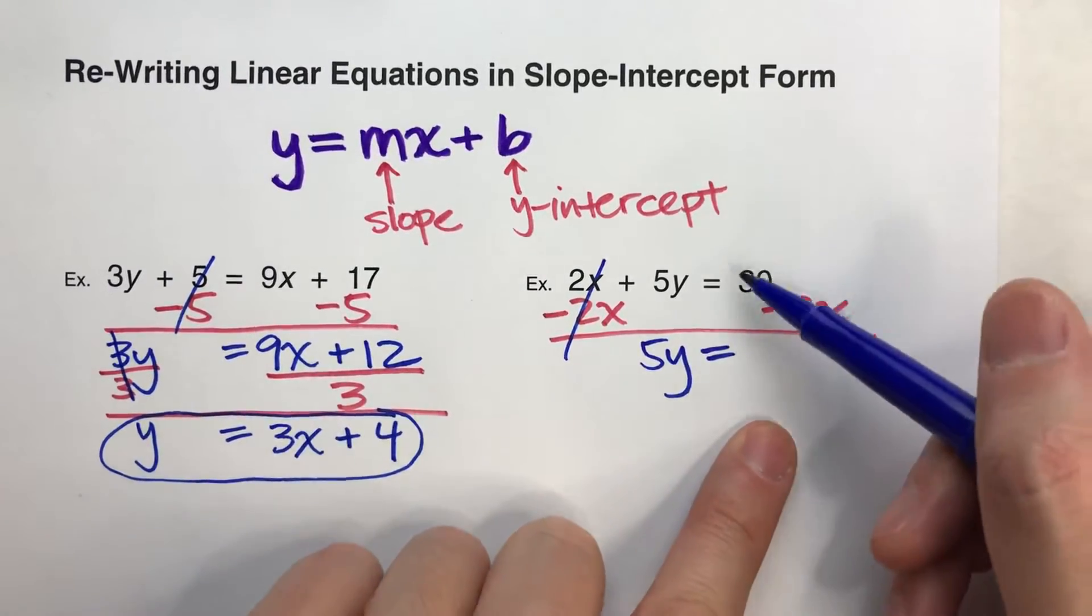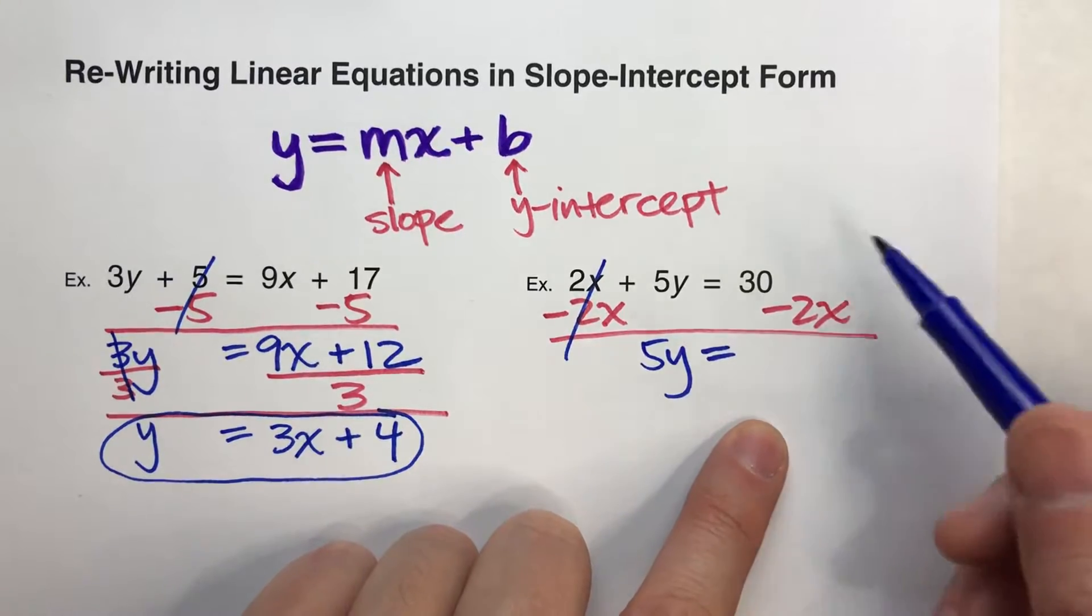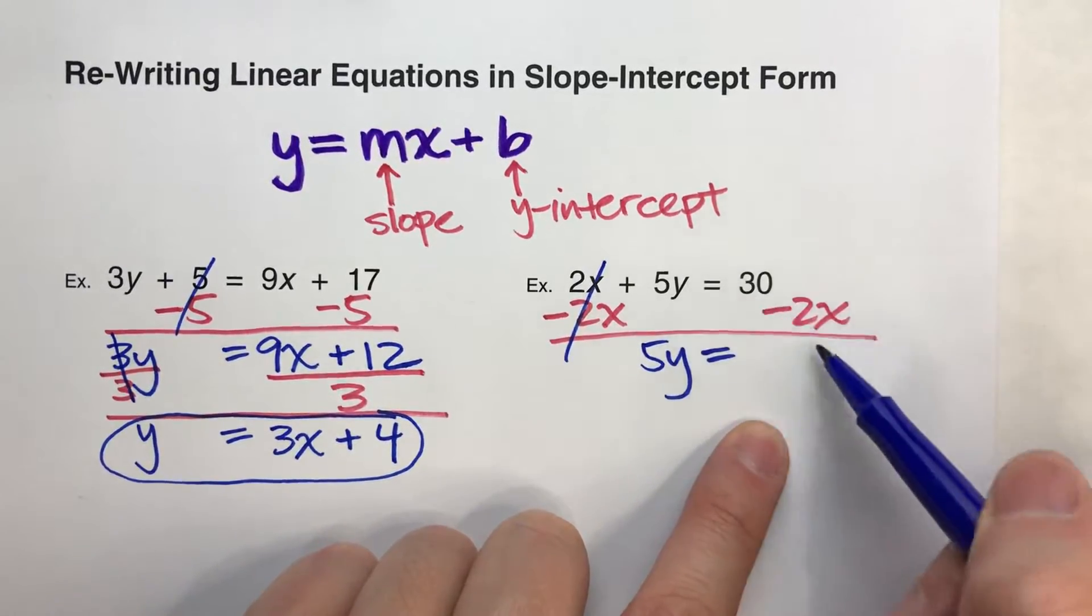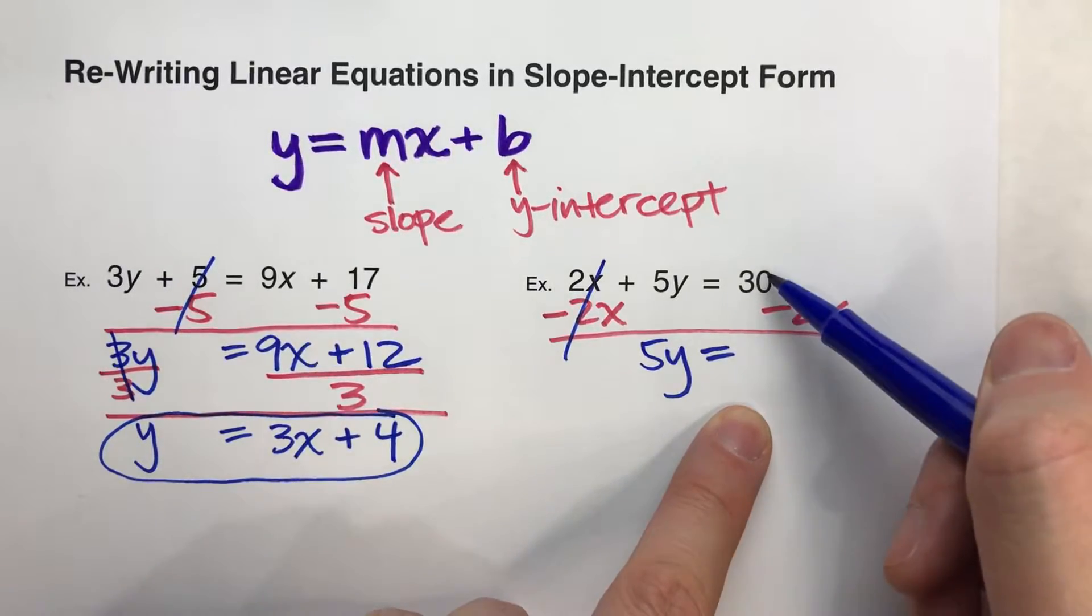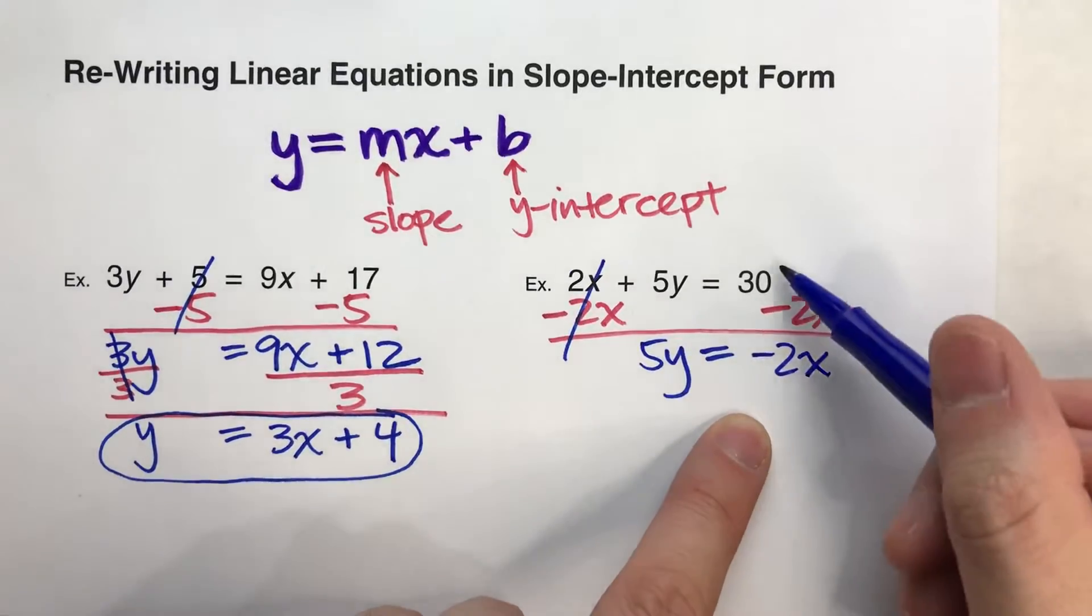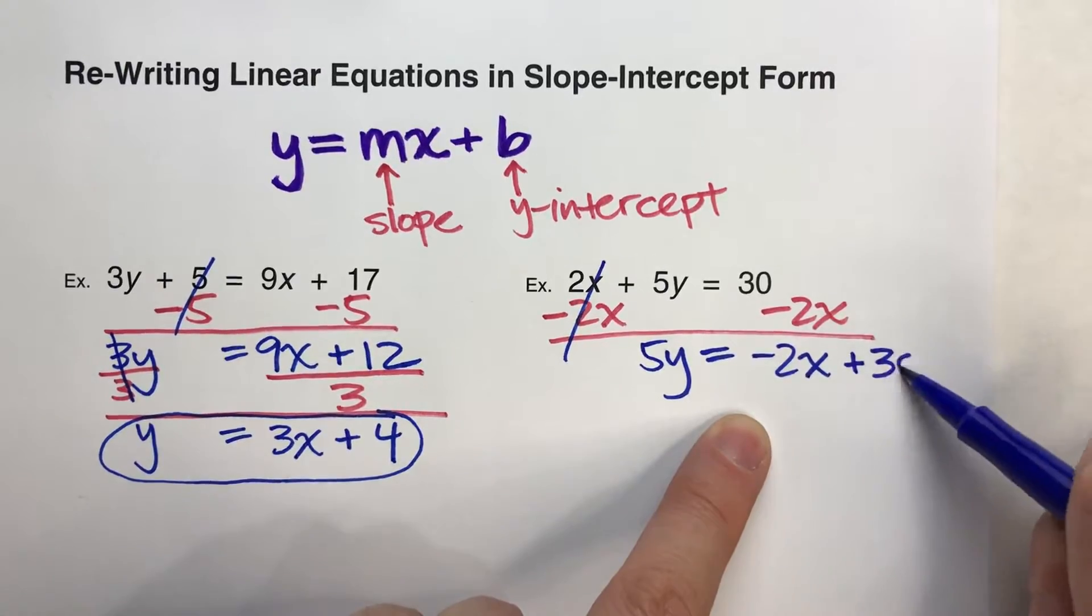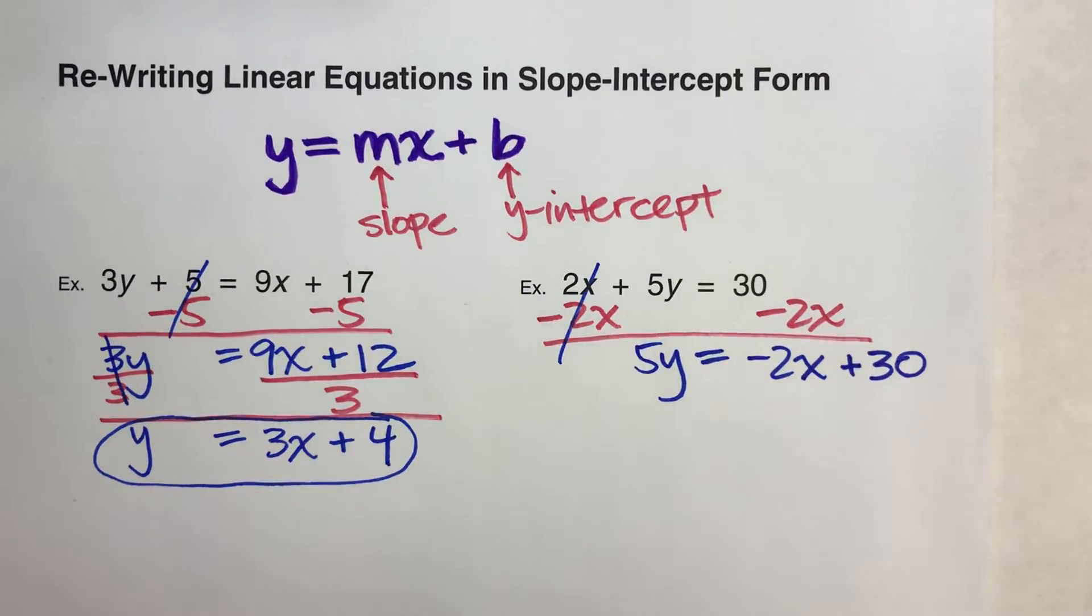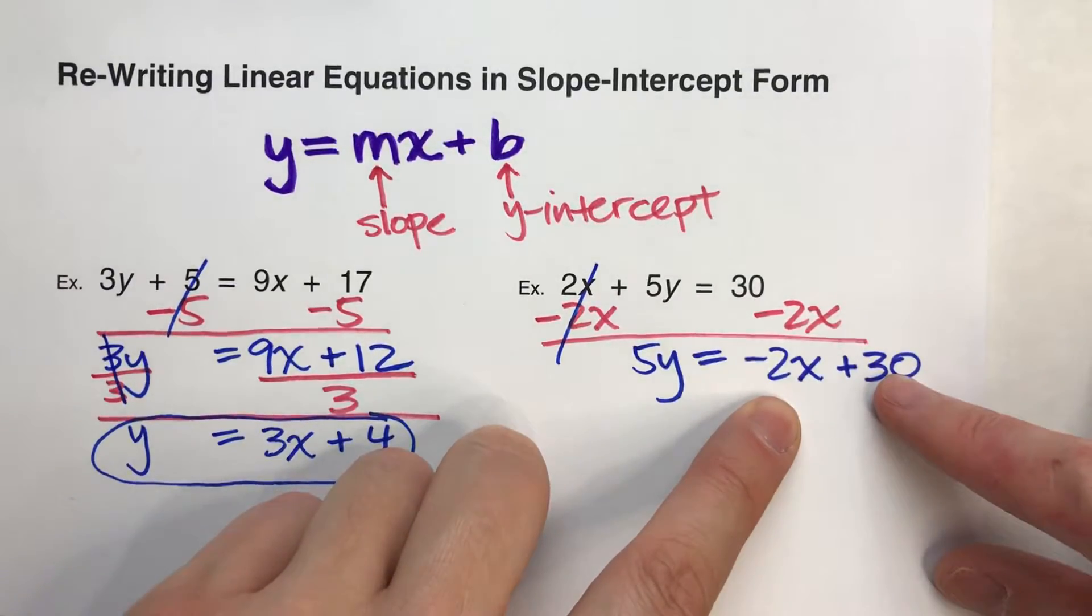On the other side, we've got a regular number, 30, and we're subtracting x's. We can't combine this. This doesn't equal 28 or 28x. We've got to keep them separate because these are x's and these are regular numbers. So I'm going to keep this negative 2x there and keep this positive 30 separate right next to it, plus 30.